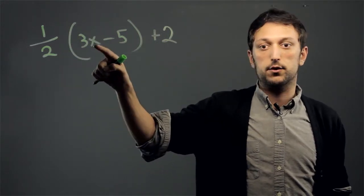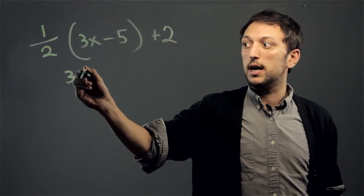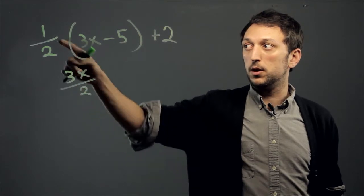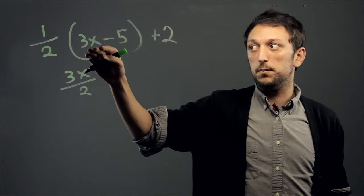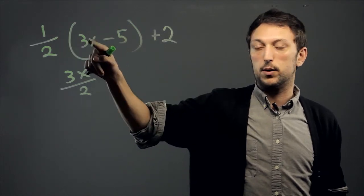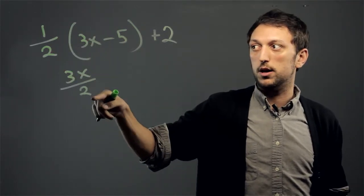1 half times 3x is going to be 3x over 2. Because what you do is basically just think about 3x as 3x over 1. And then you can say 1 times 3x, and then 2 times 1, and you get that.